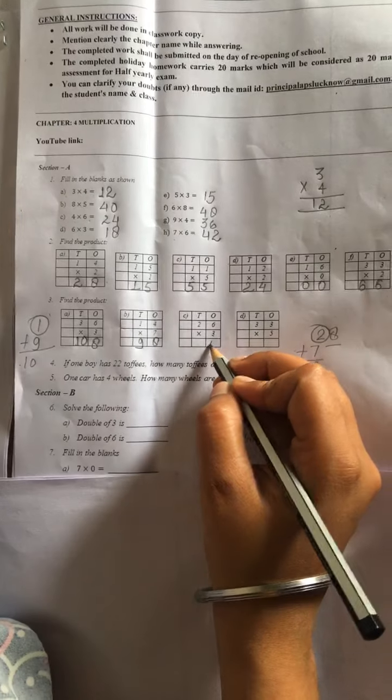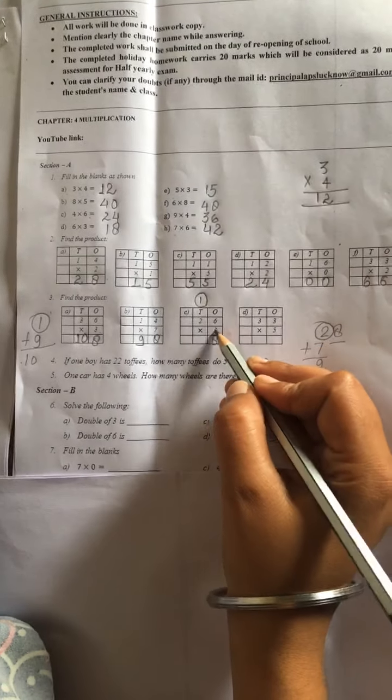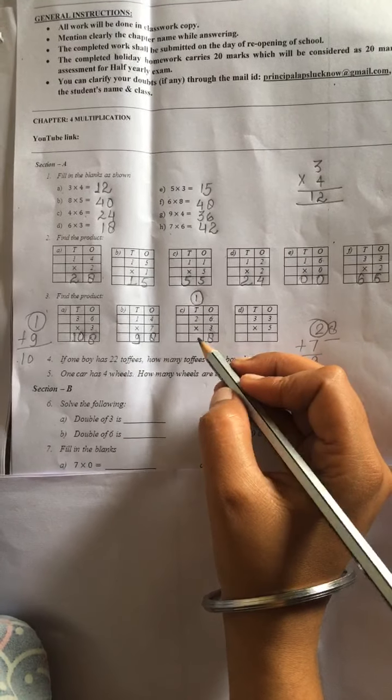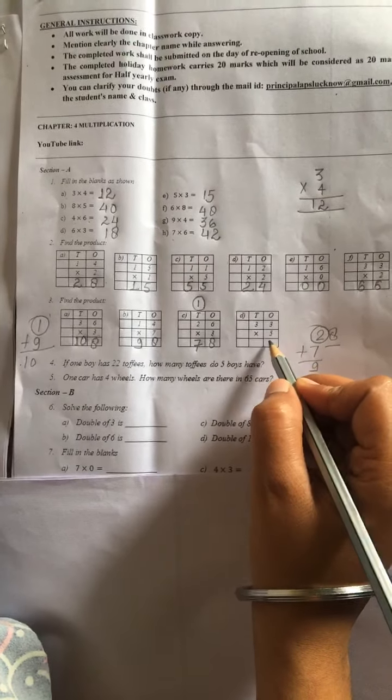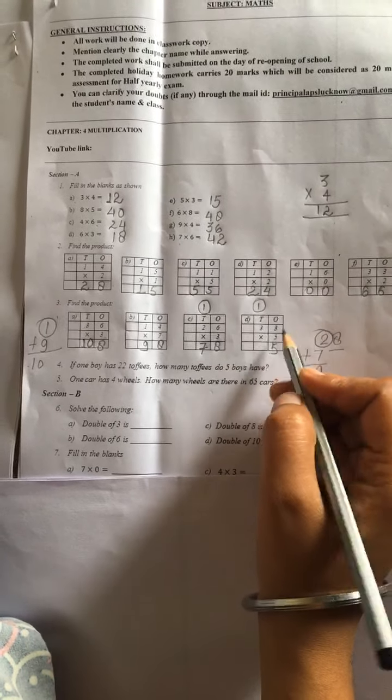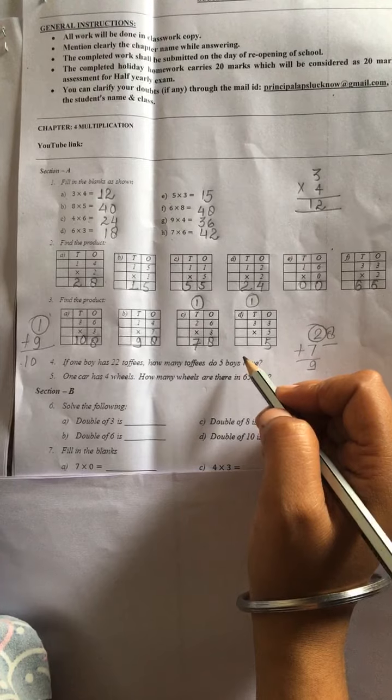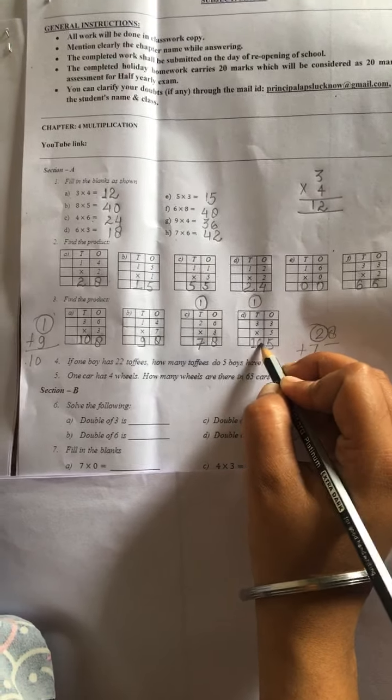3 times 6 is 18. 8 likhte hain ge, 1 hamara carry. 3 times 2 is 6 aur 1, 7. Now 5 times 3 is 15. Carry 1. 5 times 3 is 15, 15 aur 1, 16.